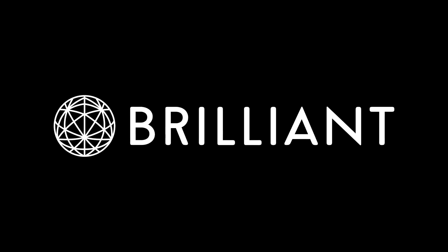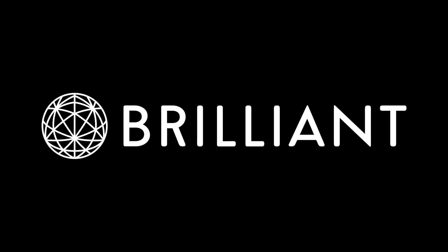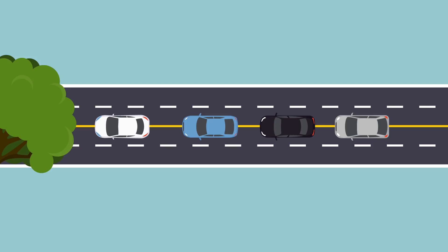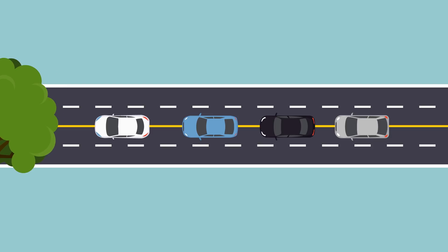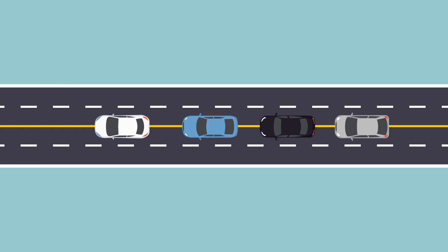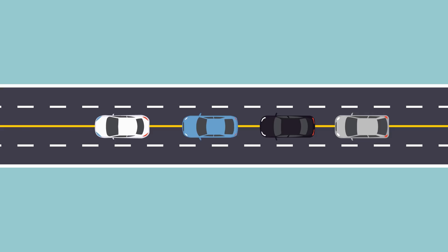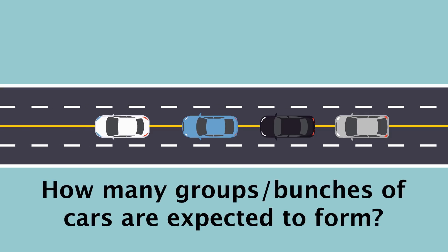This video is sponsored by Brilliant. Let's say there's a single lane road where no passing is allowed, and a tree has fallen causing a line of cars to pile up. After the tree is cleared and all cars are free to move, the question is: given some total number of cars N, how many groups or bunches of cars are expected to form after everyone gets up to their own preferred speed?